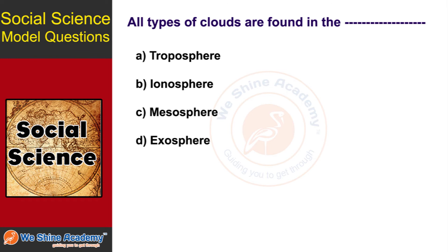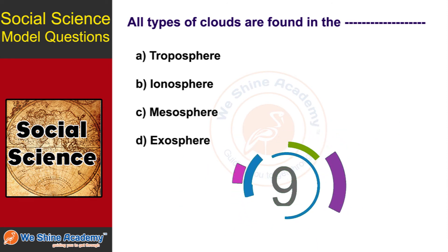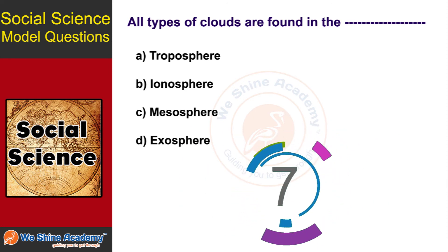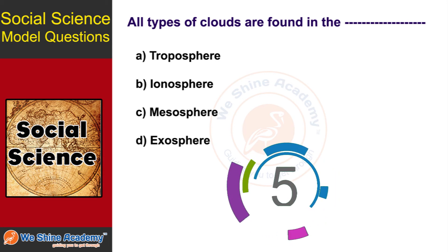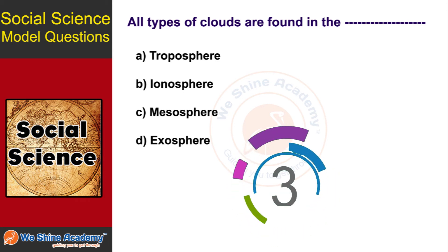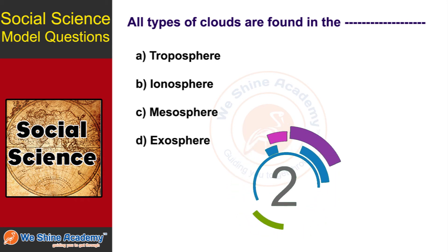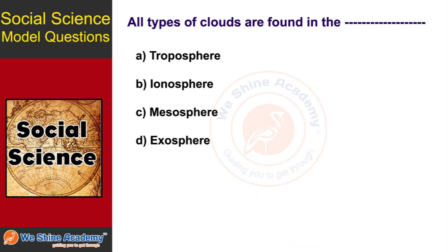The next question is: all types of clouds are found in the dash. In 10 seconds, find the answer. The answer is Option A: Troposphere. All types of clouds are found in the Troposphere.